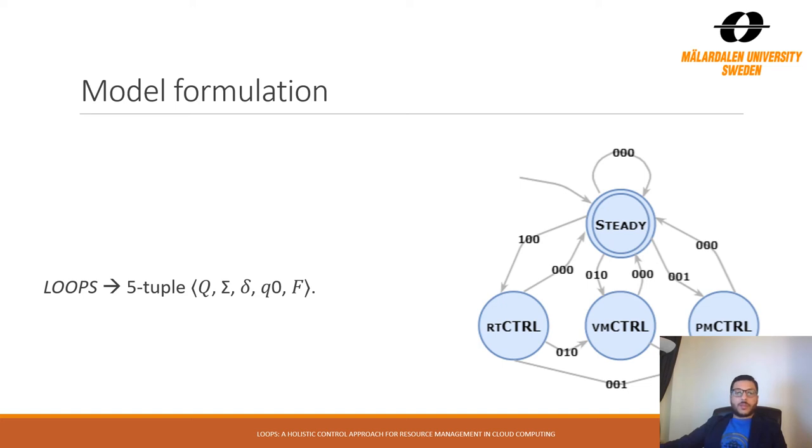The fourth tuple represents the start state, which is the steady state. F is a set of finite states and also in our system, it is the steady state here. More details are discussed in the paper.